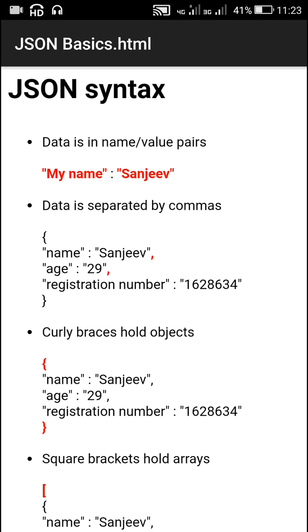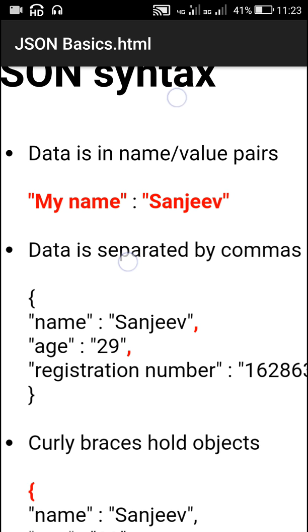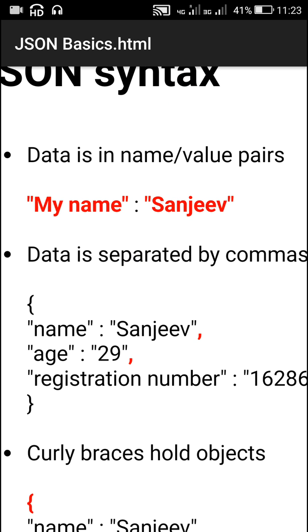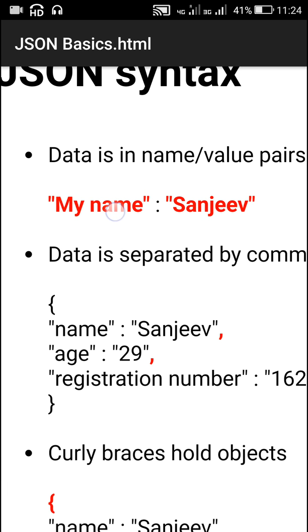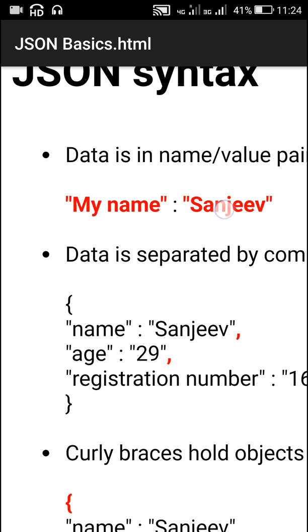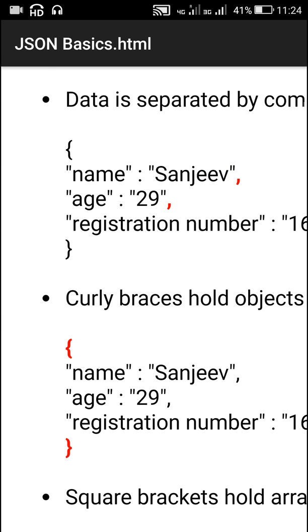Hello friends. In this video I will tell you about JSON files, starting with JSON syntax. In JSON, data is in name-value pairs. For example, this data contains the key called 'my name' and its value is 'Sanjeev', so this is a JSON data.